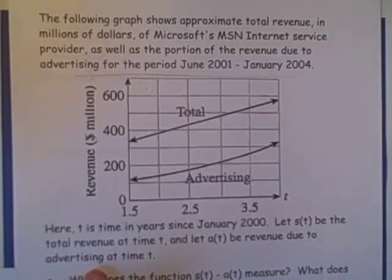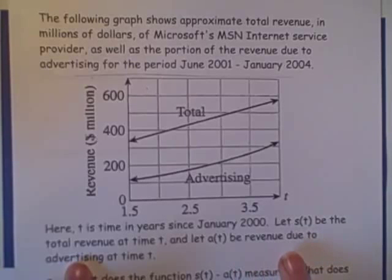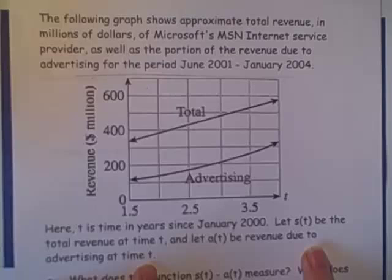Here, t is time in years since January 2000. Let s(t) be the total revenue at time t and a(t) be the revenue due to advertising at time t.